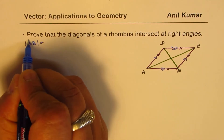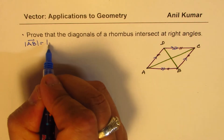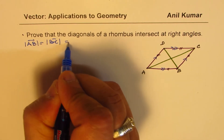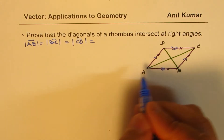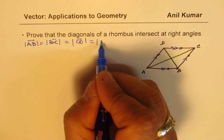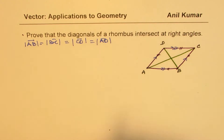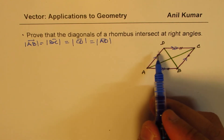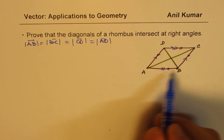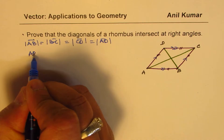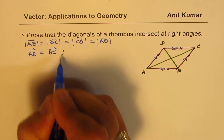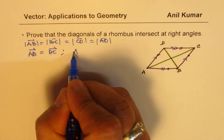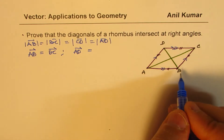We know that the magnitude of AB equals the magnitude of BC, which equals the magnitude of CD, which equals the magnitude of AD — that is given to us. We are also given that vector AB equals vector DC, and vector AD equals vector BC, since it is a rhombus.